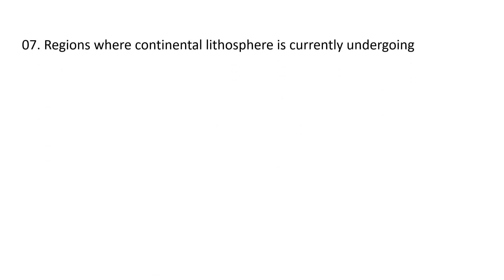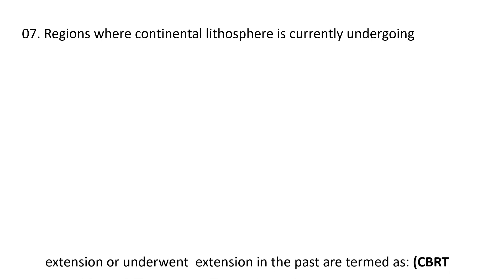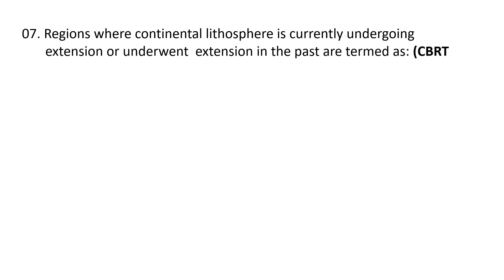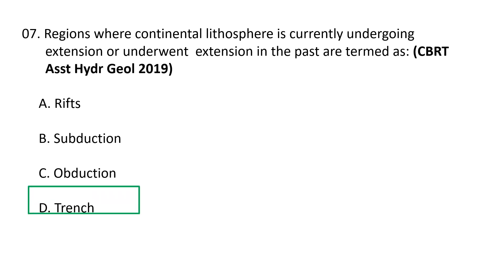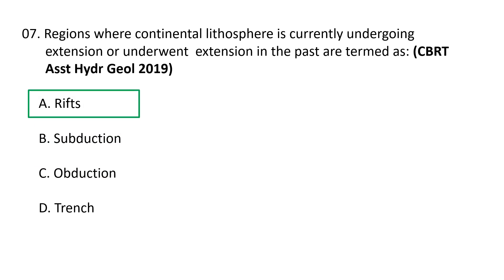Next question: regions where continental lithosphere is currently undergoing extension or underwent extension in the past are termed as: a) rifts, b) subduction, c) obduction, d) trench. The correct option is a) rifts. Rifting is defined as the splitting apart of a single tectonic plate into two or more plates separated by divergent plate boundaries. Rifting of a continental plate creates normal fault valleys, tilted block mountains, and volcanism.